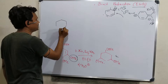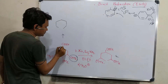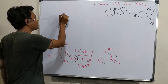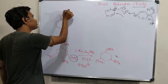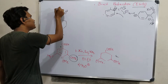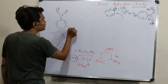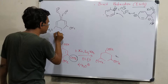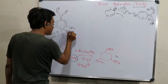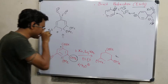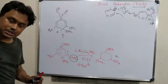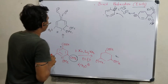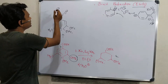We know that the first Birch reduction reduces the ipso versus para positions. Under reaction conditions, this will produce O minus, O minus, O minus, and here OMe, OMe will be present, along with hydrogen and OMe. Under alkaline conditions, OMe can be a better leaving group.